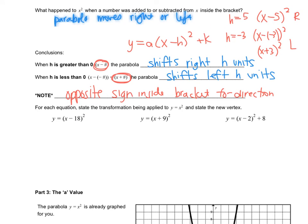Let's try some examples. We have y equals x minus 18 all squared. It's inside the bracket, so I know it's a right-left movement. Because it says x minus 18, I'm actually going to go to the right. So shift right 18 units. Please be very careful with your communication — use all the correct terminology, include 'shift' and 'units.' The original vertex was at 0, 0. You're not moving up or down, so your y coordinate isn't changing, but your x coordinate is to the right 18. So the vertex is 18, 0.